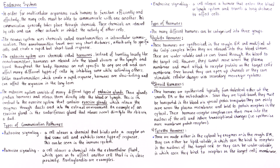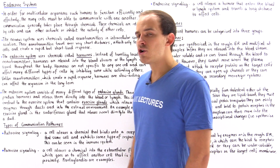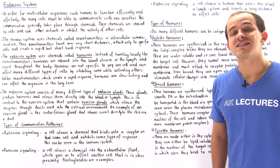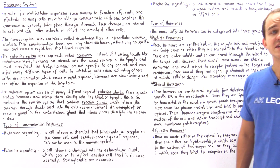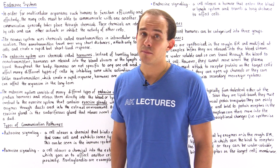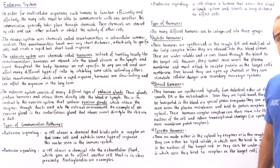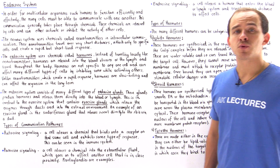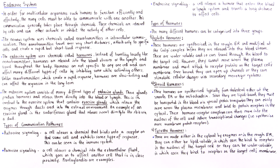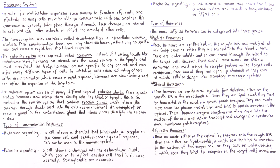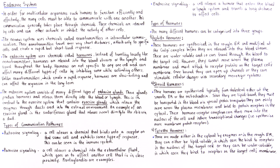Peptide hormones can travel in the bloodstream by themselves. When they arrive at the target cell, because they are water-soluble and not lipid-soluble, they cannot pass across the plasma membrane, which is made predominantly of hydrophobic tails and hydrophobic fatty acids. Therefore, peptide hormones bind onto receptor proteins found on the plasma membrane of the target cell. Once bound, they can create change — for example, opening a channel protein to alter ion concentration, or activating a secondary messenger system such as cyclic AMP.